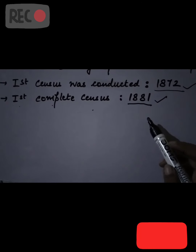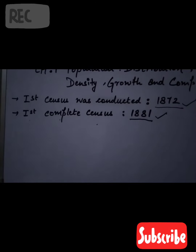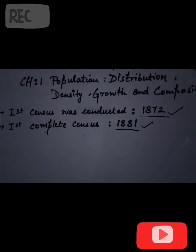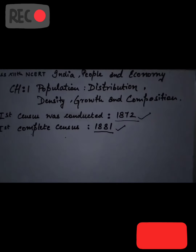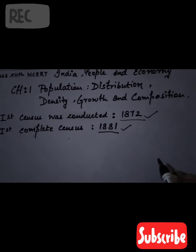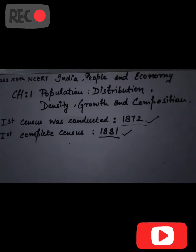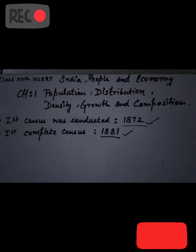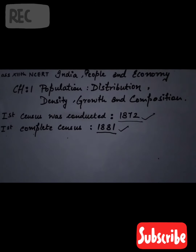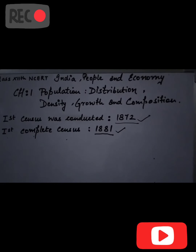Now let's talk about population distribution. In India, you will see different variations — in some places the population is higher and in some places it is lower. We will look at what the reasons are and which factors are responsible for this.